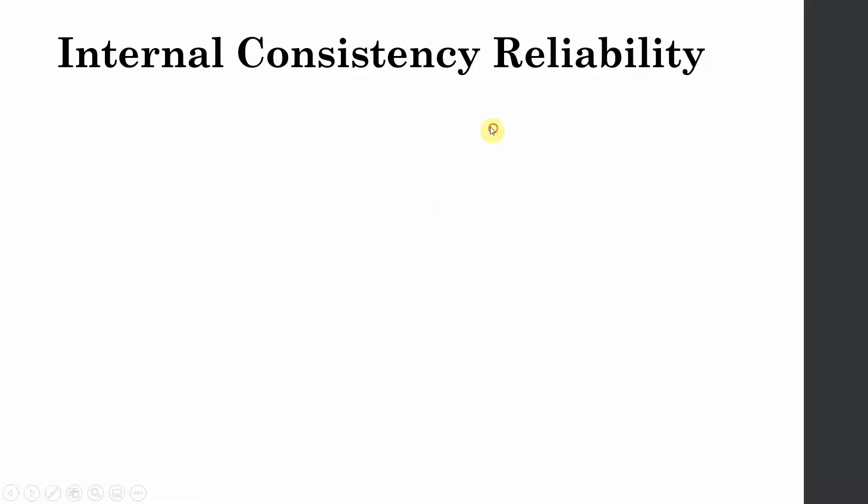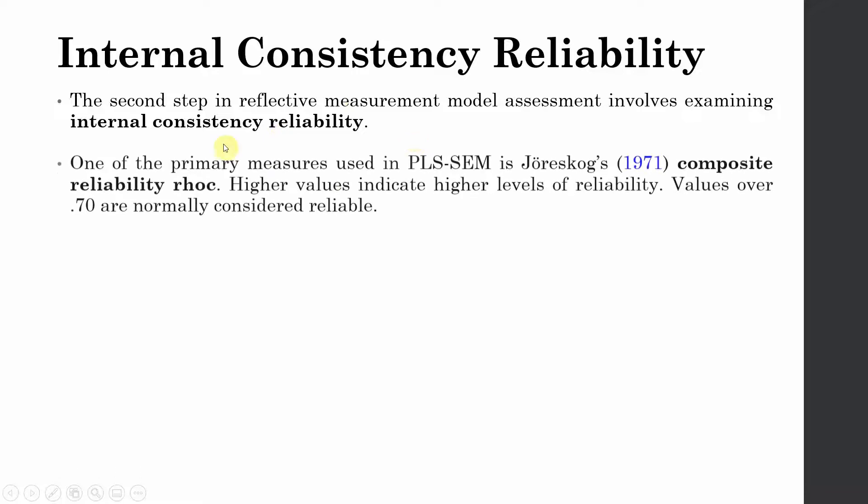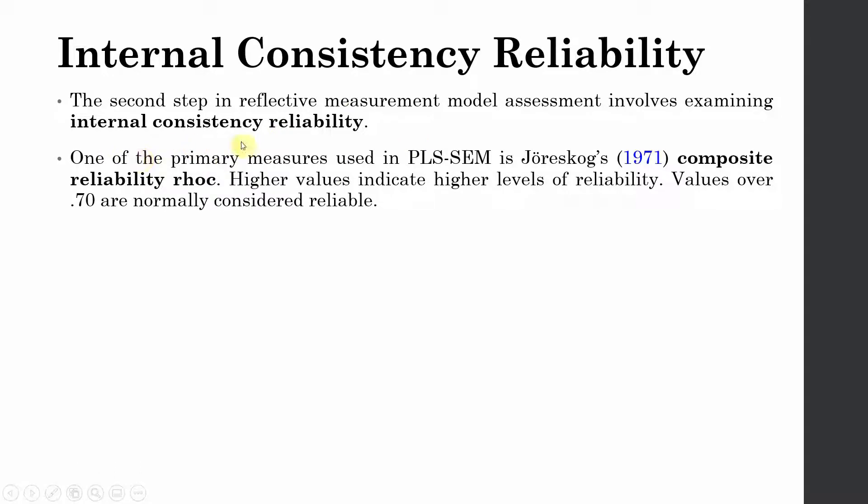Internal Consistency Reliability. This is the second step in reflective measurement model assessment that involves examining internal consistency reliability. One of the primary measures in PLS-SEM is composite reliability, i.e., rho C. Higher values indicate higher levels of reliability. Values over 0.70 are normally considered reliable.